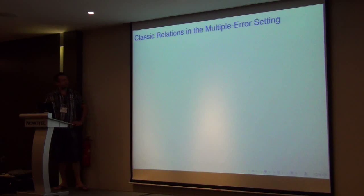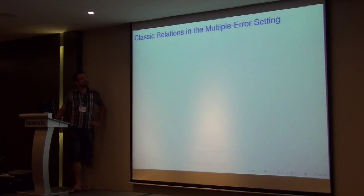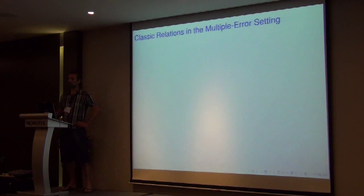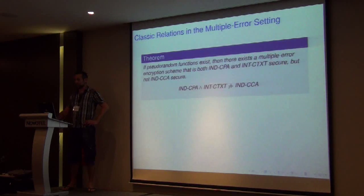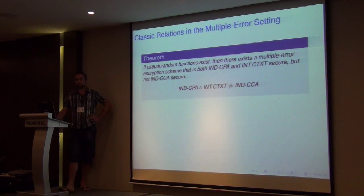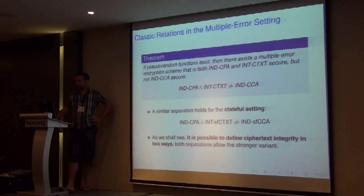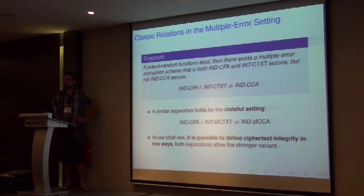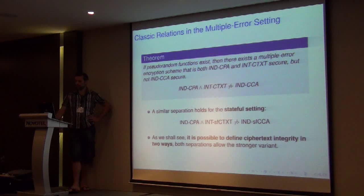The first question we ask is: do these relations hold in the multiple errors setting? That is, do they still hold if we allow schemes to have multiple errors? The answer is no. We have the following separation: assuming one-way functions exist, there exists a scheme which has multiple errors, is both NCPA secure and satisfies ciphertext integrity, but is not NCCA secure. A similar separation also holds for the stateful setting.